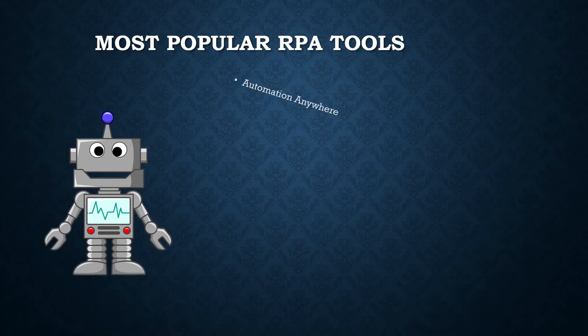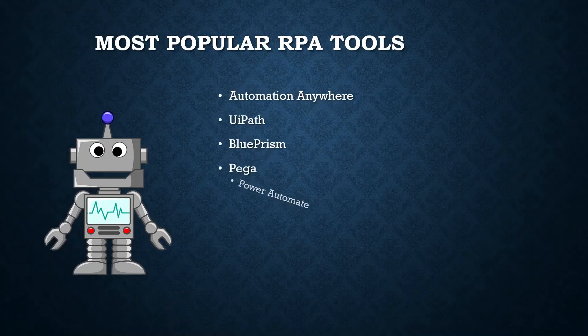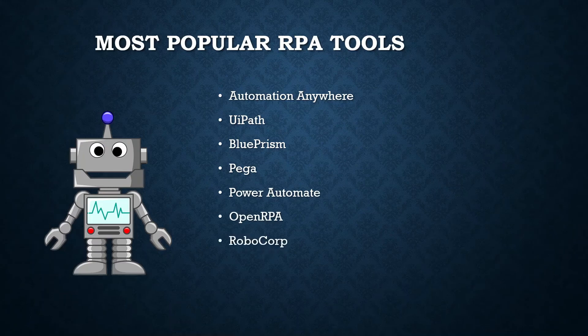The most popular RPA tools are Automation Anywhere, UiPath, Blue Prism, Pega, Power Automate, Open RPA, and Robocorp. UiPath and Automation Anywhere are currently leading the RPA industry. In this tutorial series, I will be training you on Automation Anywhere A360.